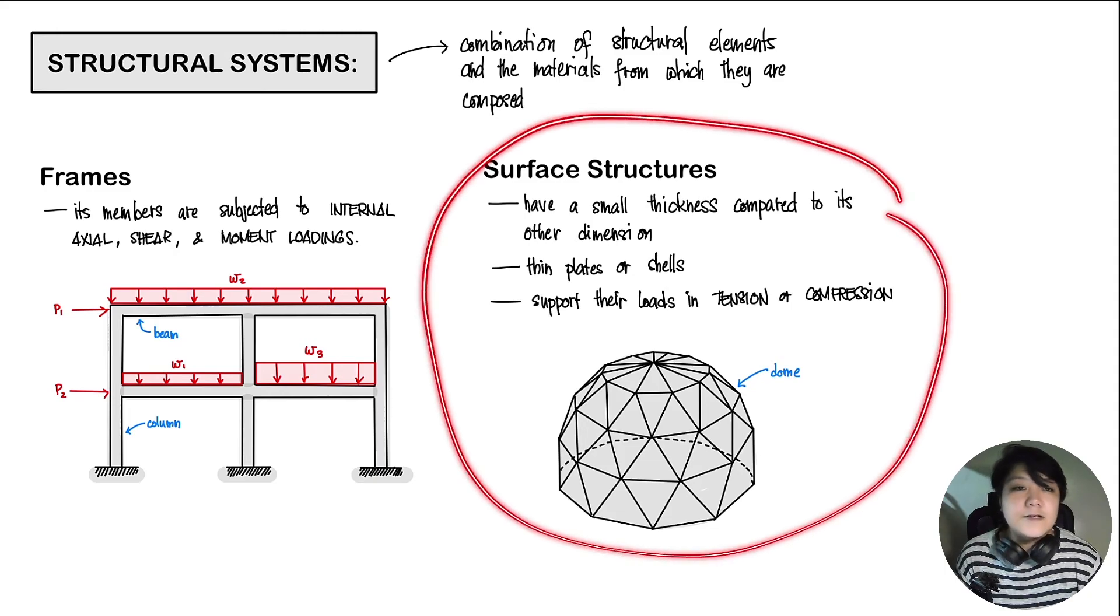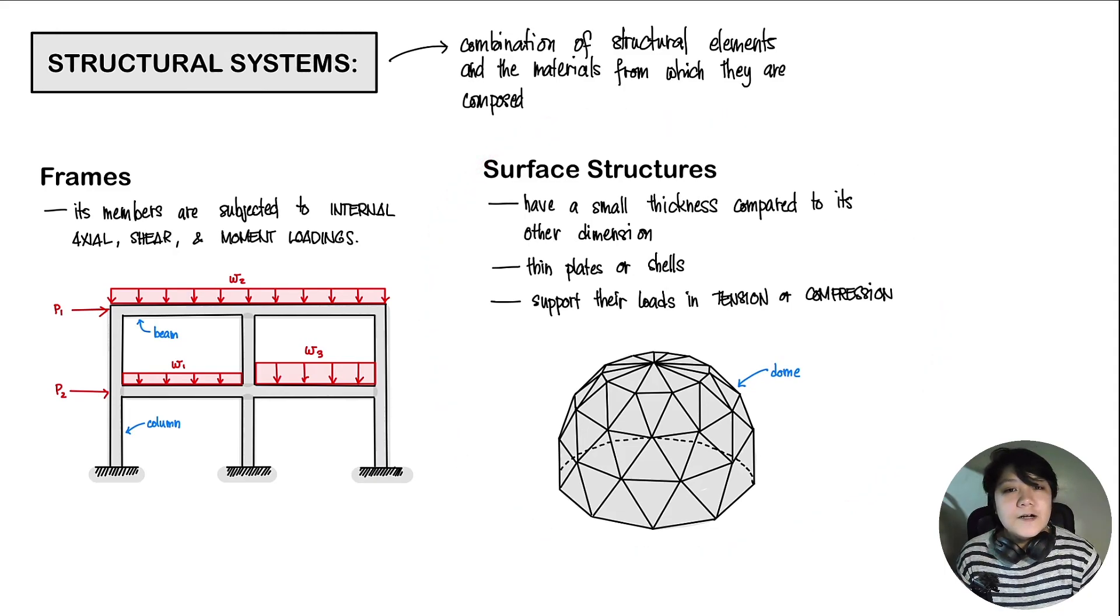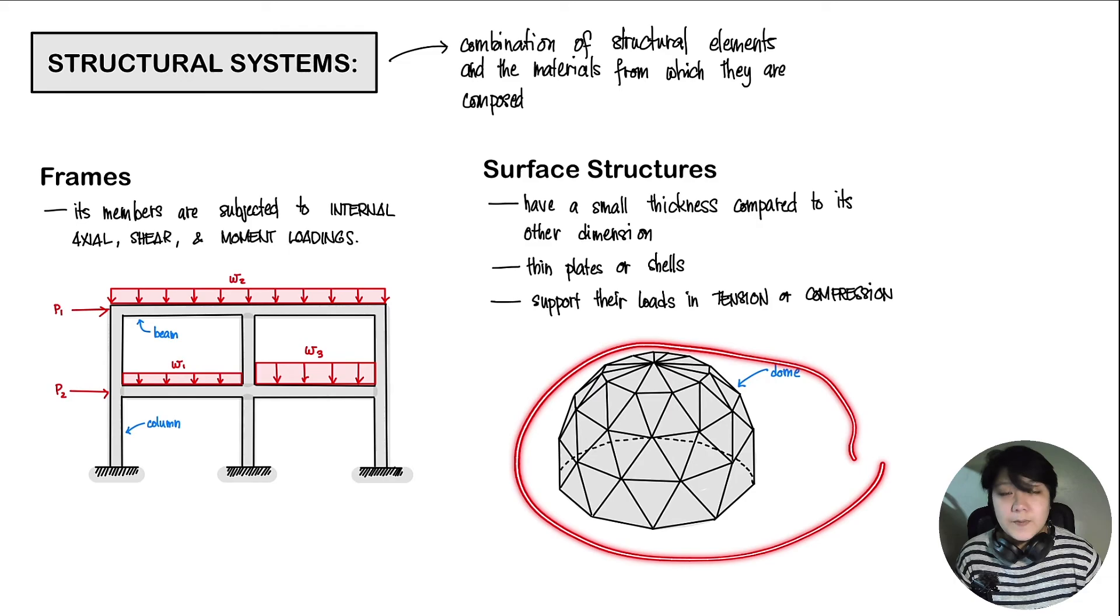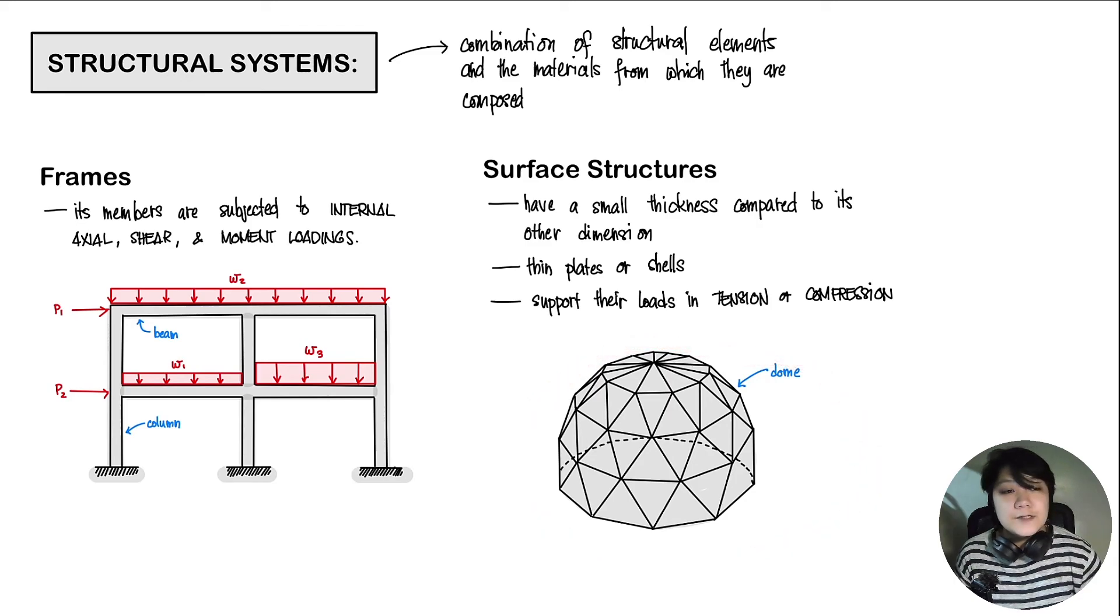And lastly, we have our surface structures. Our surface structures, they have a small thickness compared to its other dimensions. It comprises of thin plates or shells. It supports their loads in tension or compression. This is a sample of our dome. Structural analyses of your surface structures, such as your domes, will not be covered under this course, since it can be pretty complicated, and is usually covered in your graduate school studies.